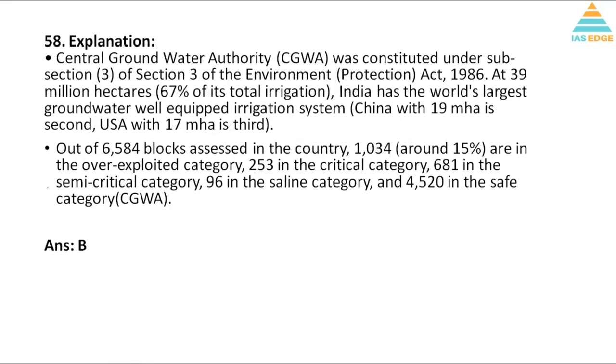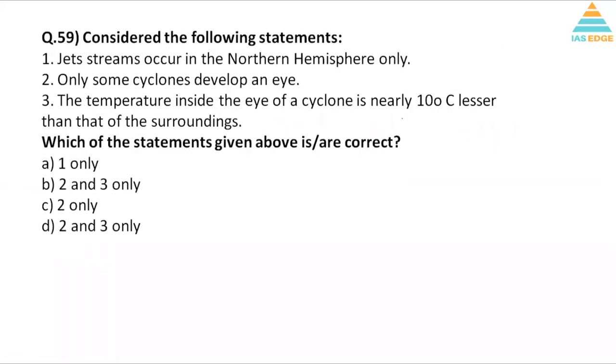Question 59, consider the following statements: jet streams occur in the northern hemisphere only. No, they occur in northern as well as southern hemisphere, so one is incorrect. Only some cyclones develop an eye - that is also true. So the cyclone when it moves, the center of the cyclone has a different temperature and that is the eye of the cyclone. No, it is a low pressure area. This is a high pressure area, center of the cyclone.